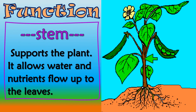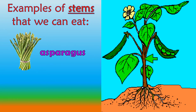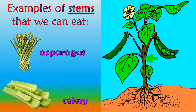Stem: supports the plant. It allows water and nutrients to flow up to the leaves. Some examples of stems that we can eat are asparagus and celery.